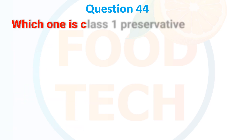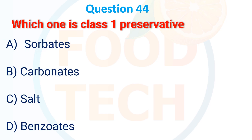Question 44. Which one is a class 1 preservative? A. Sorbate. B. Carbonate. C. Salt. D. Benzoate. The correct answer is C: salt.